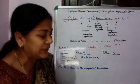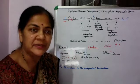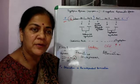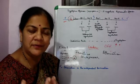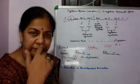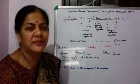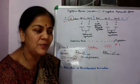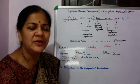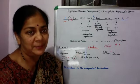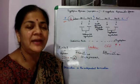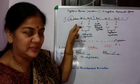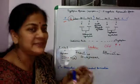Attenuation is a rho-independent termination. Normally in bacterial systems, there is a rho protein which leads to termination of transcription. However, this second level of regulation is rho-independent, and it depends upon the leader region.